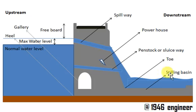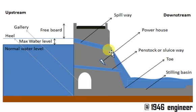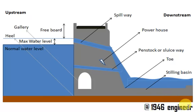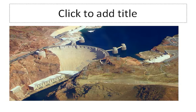Here you have the stilling basin. The stilling basin is used to prevent the erosion caused by the water from the spillway. It is used to prevent the erosion of the soil strata. Those are the important parts you can identify in this diagram.